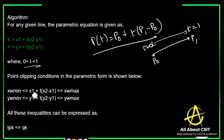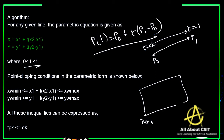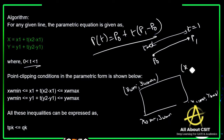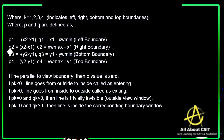The point clipping coordinates in parametric form are: xw_min ≤ x1 + t(x2 - x1) ≤ xw_max. These four inequalities can be expressed as tpk ≤ qk, where k = 1, 2, 3, 4, indicating the left, right, bottom, and top boundaries of the clipping window.